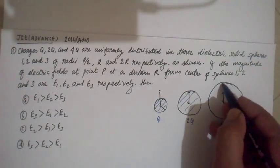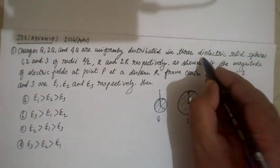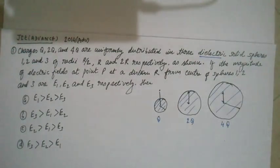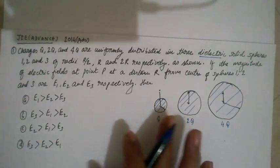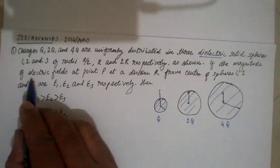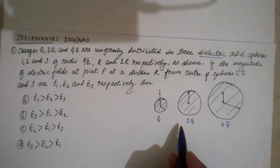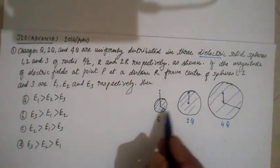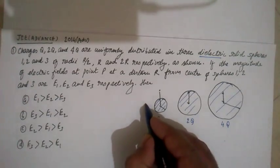These are all dielectric solid spheres, so the charge will be in volume. Here it is volume distribution of charge. The radii are r/2, r, and 2r. So here the radius is r/2, here r, and here 2r.